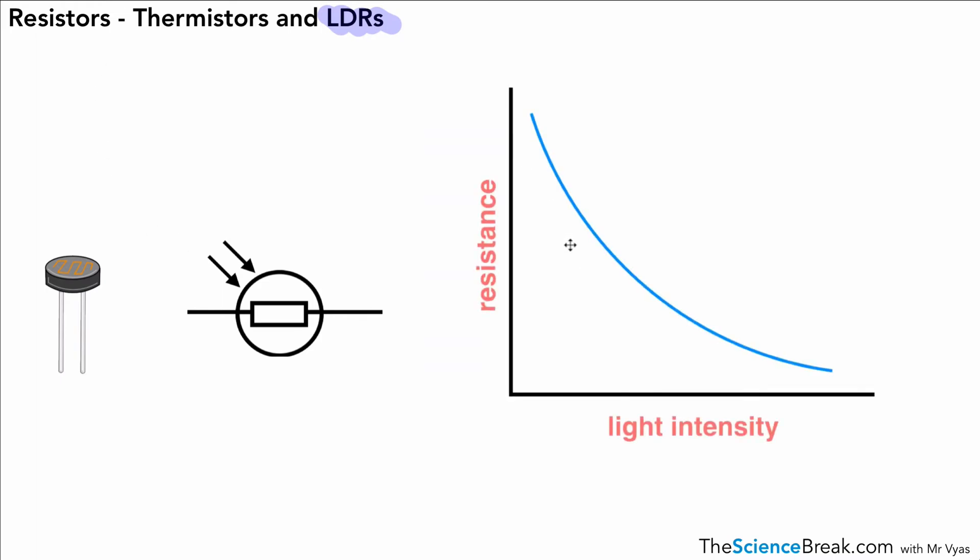If we were to look at the graph for that, it's very similar in shape—in fact, it's almost the same in shape—but instead of temperature at the bottom we have light intensity. On the left-hand side we have low light intensity, or in other words possibly darkness. That will give us a high resistance and a low current. And at the other end we'd have the opposite: high light intensity, low resistance, high current.